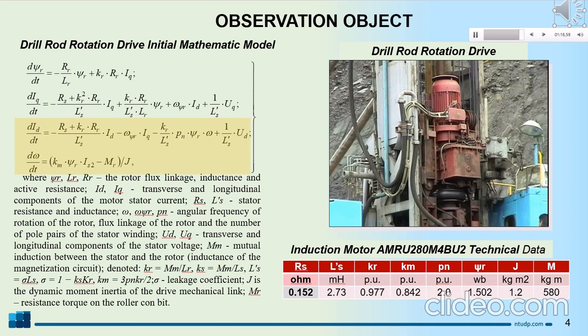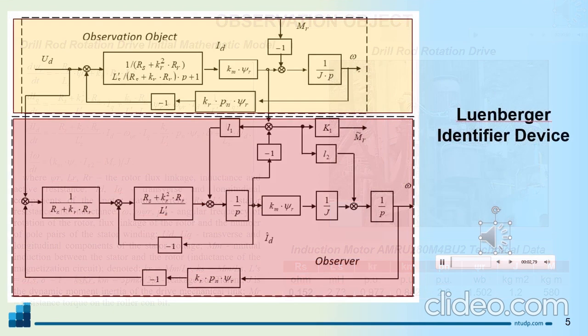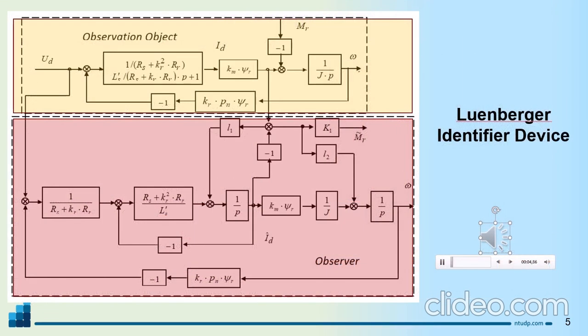With this approach, we obtain two quasi-linear equations that describe the dynamics of the induction motor, the block diagram of which is shown on slide 5. The problem of determining the resistance torque on the working body was researched using known methods for identifying external influences that are not available for direct measurement. First, the Luenberger identifier was synthesized.